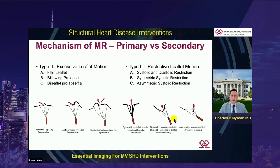The first rule when addressing these patient populations is to confirm the mechanism of MR, and typically it's going to be a distinction between primary versus secondary. Certainly certain types of secondary MR would be less favorable to repair, such as someone with mitral rheumatic heart disease.